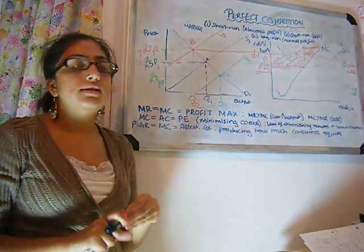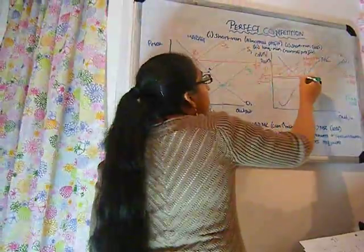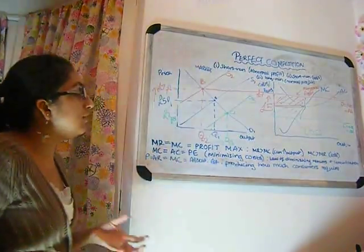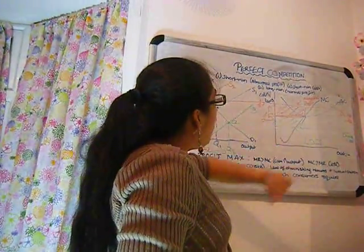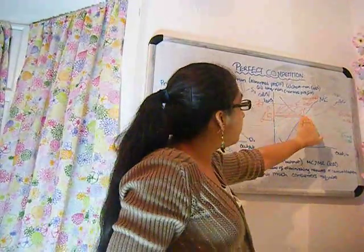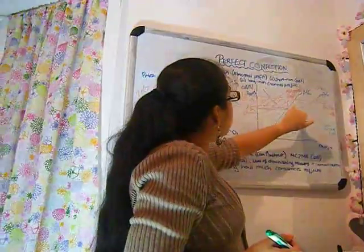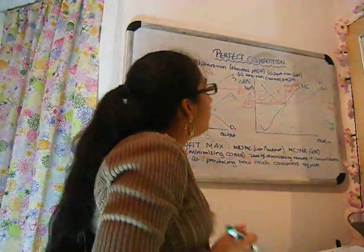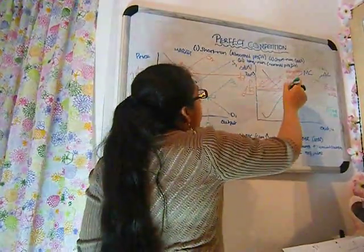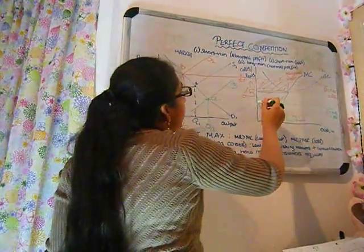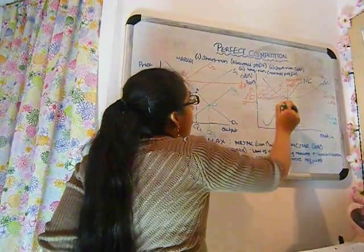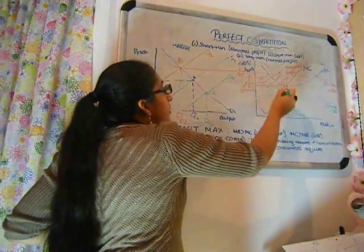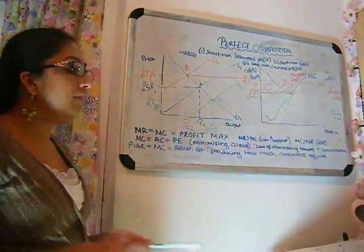A firm will make a loss in this scenario and the loss will be this rectangle just over here. Now why is that the loss? That is the loss because as we mentioned before, a normal firm operates where average costs equal average revenue at this point here, where there's productive efficiency before costs begin to rise. This point here is where normal firms operate, but if they are operating below that, that means all of this space here the average cost is much greater than the average revenue and therefore they have a loss and this is why firms will go bankrupt and they will leave the industry.